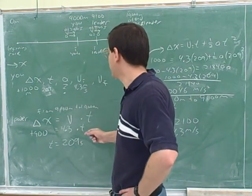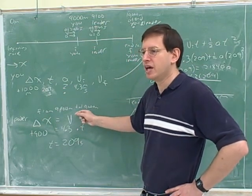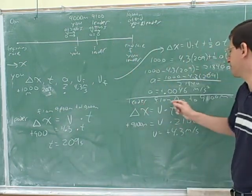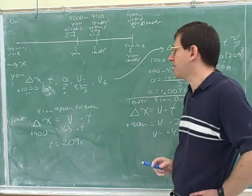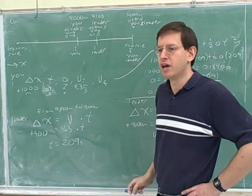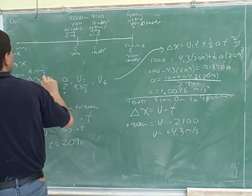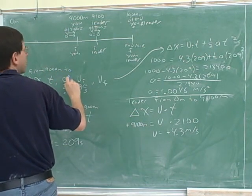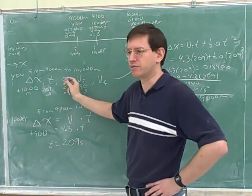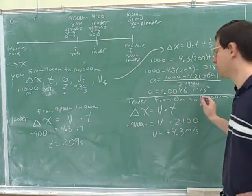You write these down separately. Even for a particular object, you might need this framework more than once. Here we needed the framework once for the leader from 9,100 to 10,000 and a different framework for the leader from 0 to 9,100. People tend to be sloppy about not clearly labeling what each framework refers to, and then they get confused. This framework refers to U from 9,000 meters to 10,000 meters, so I know exactly who these variables are referring to.